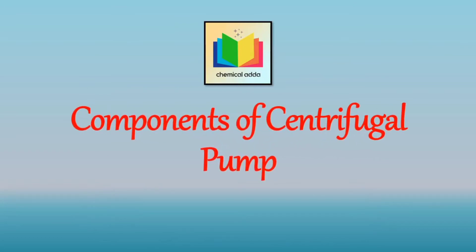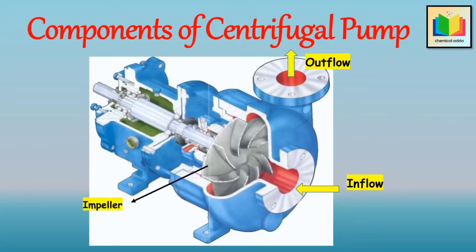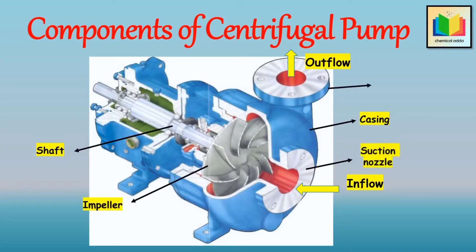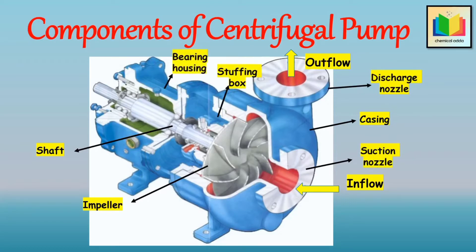A centrifugal pump has two main components. The first is the rotating component, which includes an impeller and a shaft. The stationary components include the casing, suction and discharge nozzle, seal chamber and stuffing box, and bearing housing. Now let's see these components one by one.